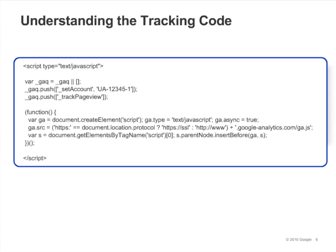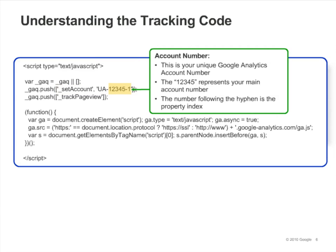Let's look at the tracking code. This section of the code tells Google Analytics which account this traffic belongs to. The number immediately following the UA dash is your unique Google Analytics account number, and the number following the last dash is the property index. Review the lesson on accounts and profiles to learn about the property index. This section of the tracking code automatically detects secure versus non-secure pages, so you can use the same tracking code on both HTTPS and HTTP pages.